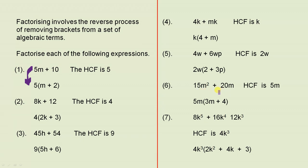For the next example, we have those two terms there. The HCF is 5m. Because 5 divides into 15 and into 20, and m divides into m squared and into m. Put 5m outside. 5m times what gives you 15m squared? 3m. 5m times what gives you 20m? 4. That's the answer.